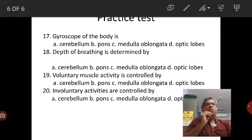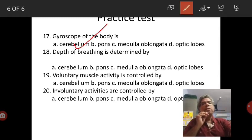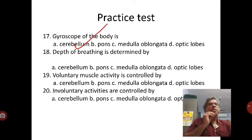Gyroscope of the body is cerebellum. This is also called little brain, and the cerebellum is responsible for maintenance of equilibrium and also for regulating the activities of voluntary muscles. Because it is regulating the posture, equilibrium, and voluntary muscle activity, this is called gyroscope of the body.